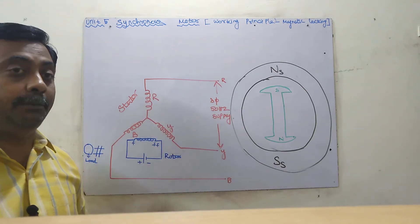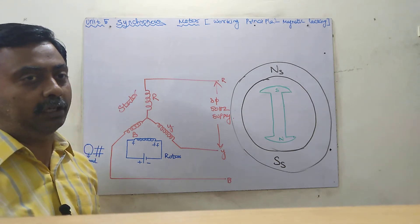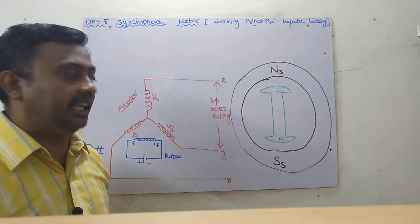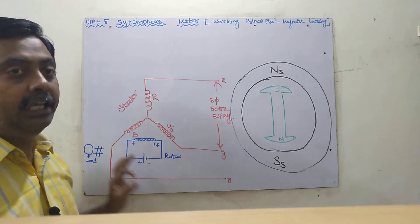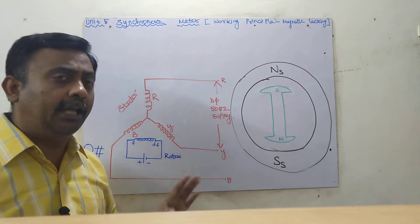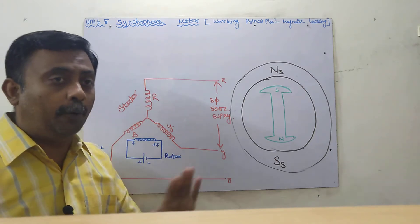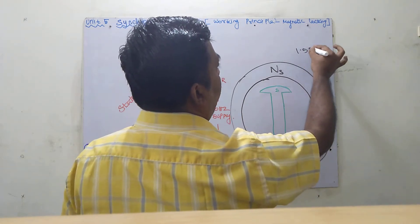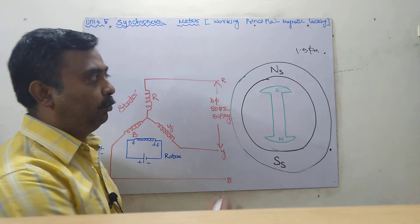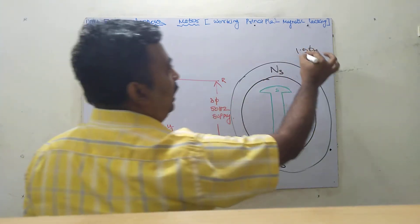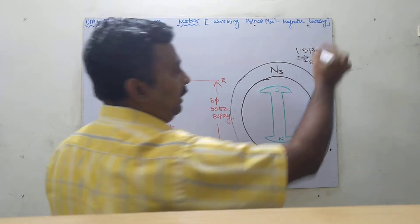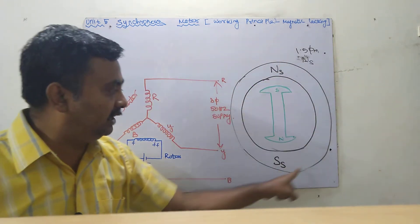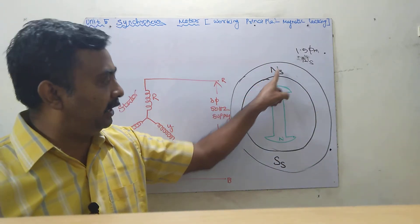Similar to an induction motor, when we give three-phase supply to the stator, a rotating magnetic field (RMF) is created. The stator is physically stationary, but the magnetic field rotates. The magnitude of this rotating magnetic field is 1.5 times the maximum flux. The magnetic field rotates at synchronous speed. When three-phase supply is given to stator RYB, the rotating magnetic field is created with a north pole and south pole.